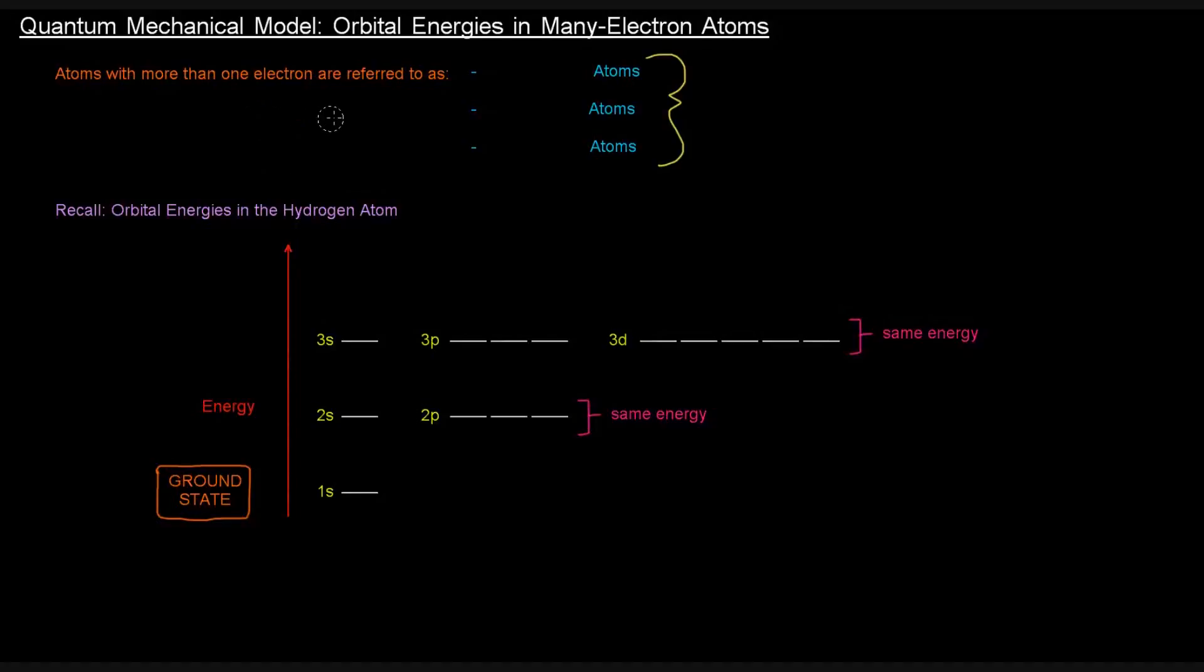Atoms with more than one electron are referred to as many electron atoms, multi-electron atoms, and polyelectronic atoms. They all mean the same thing - they have more than just one electron.